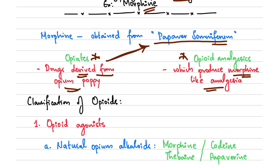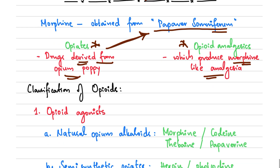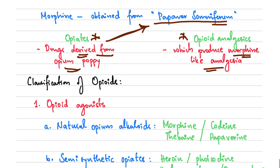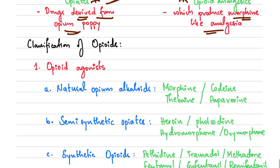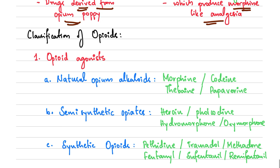Moving on to the classification of opioids. First we have the opioid agonists. Under these, we have the natural opium alkaloids which are morphine, codeine, thebaine, and papaverine.